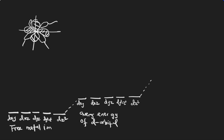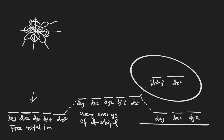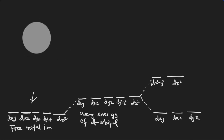The dx²-y² and dz² are on the axis and go higher in energy, while the remaining three go lower in energy compared to the average energy. When orbitals are in the free metal ion they are degenerate, but once ligands approach they split. The reverse is the case for tetrahedral: in tetrahedral complexes, the orbitals that were on the axis are now believed to be in between the axis, so it is the opposite.